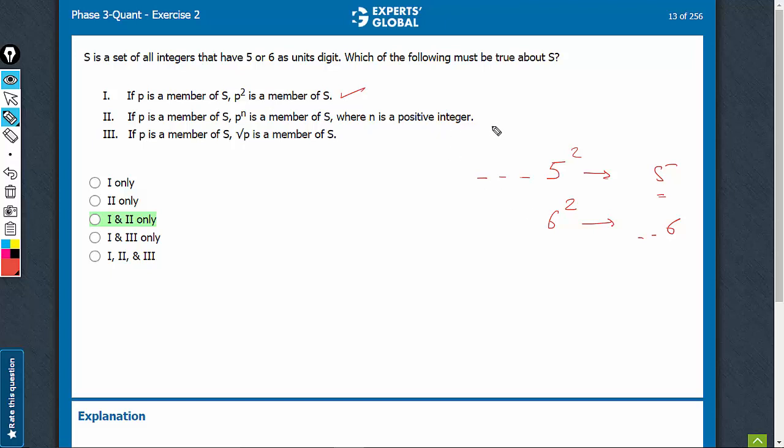Look at the second one. Again, this is also going to be fine because it's not only the square, all the powers of 5, see 5 cubed, 5 raised to the power 4, all of them will end up with a 5.